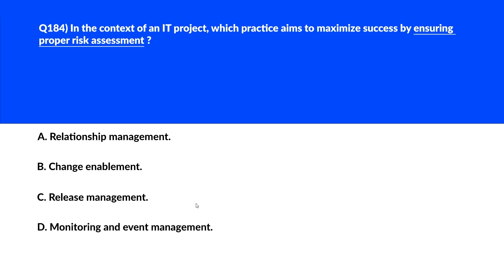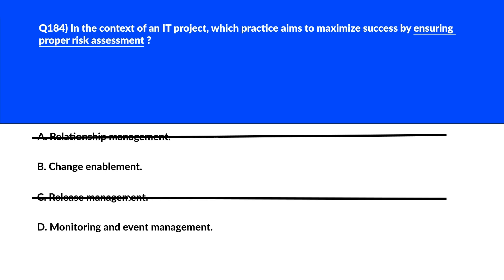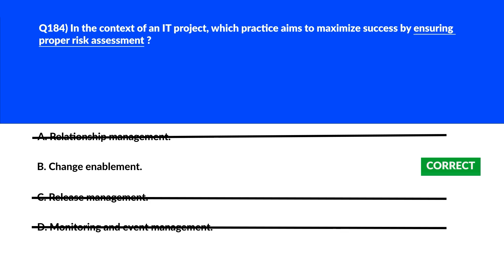Now we have a question to choose a practice which aims to maximize success by ensuring proper risk assessment. Option A says relationship management. Relationship management focuses on maintaining positive relationships with stakeholders but does not address risk assessment — incorrect. Option B says change enablement. Change enablement ensures that all risks are properly assessed before changes are implemented — we'll park this. Option C says release management. Release management handles deploying releases but doesn't focus on assessing risk — remove it. Option D says monitoring and event management. This involves tracking and responding to events but doesn't address risk assessment for changes — reject it. We'll lock option B, change enablement, as the right choice.